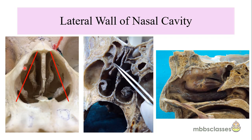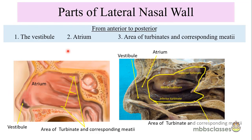These are the two lateral walls of the nasal cavities. Now let us see the different parts of the lateral wall in sequential manner from anterior to posterior. The most anteriorly located is the vestibule. Just behind the vestibule is the area of the atrium, and the most posteriorly placed is the area of the turbinates and the corresponding meatus.